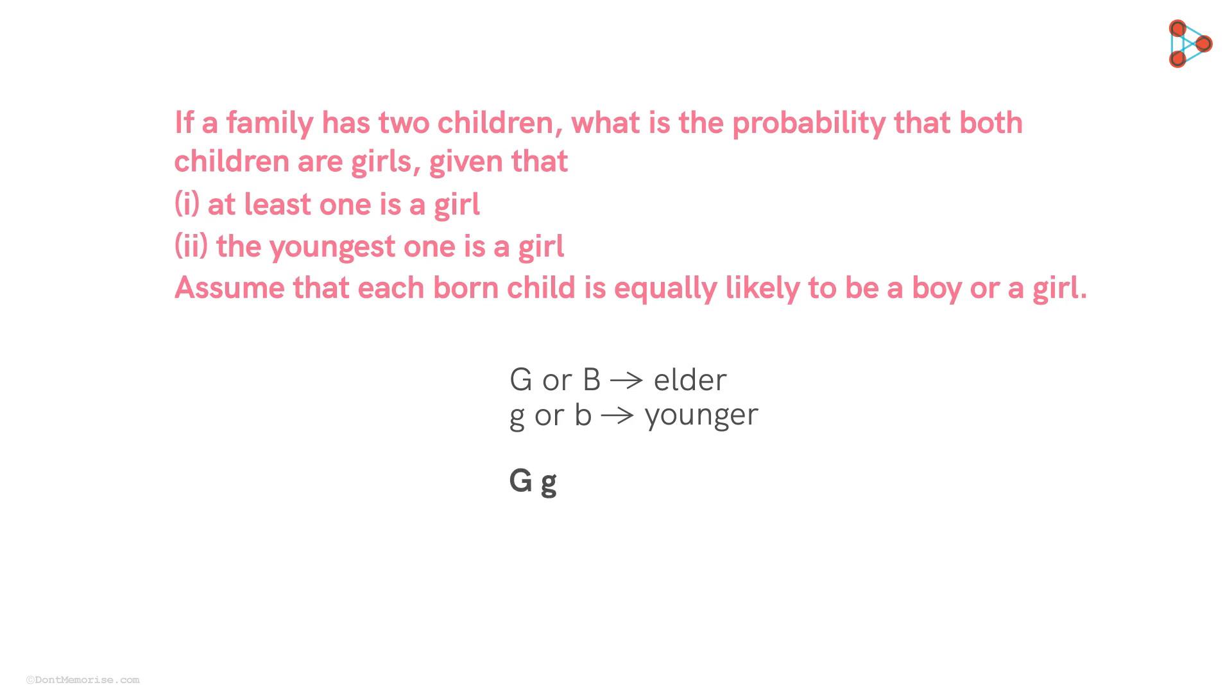Both the children are girls. The elder one is a girl but the younger one is a boy. It can also be that the elder child is a boy and the younger one is a girl or both the children are boys. This is a sample space, a list of all possible outcomes prior to knowing any given facts or conditions.